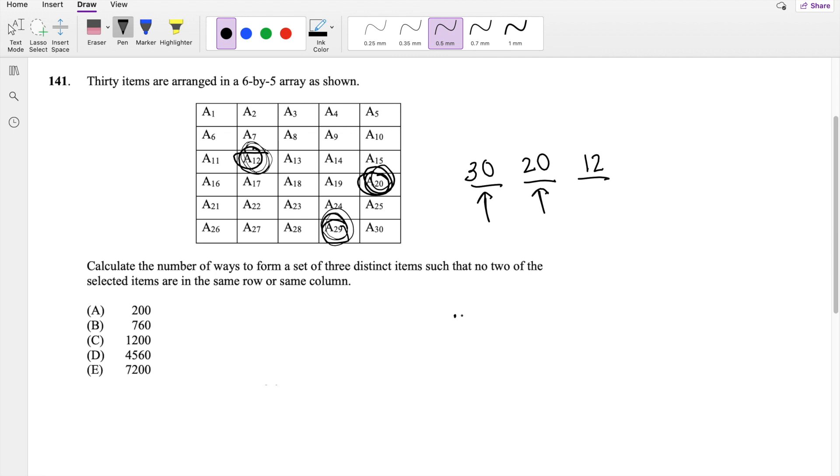So this is going to be equal to 30 times 20 times 12, divided by 3 factorial. So this is equal to 1,200, our answer C.